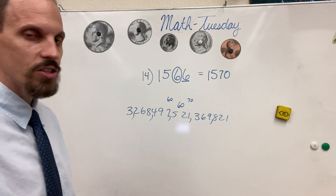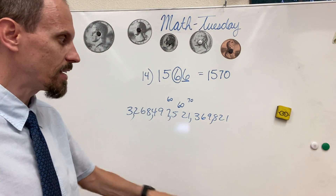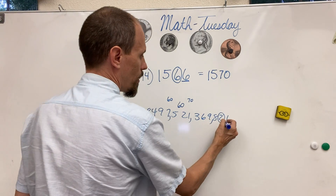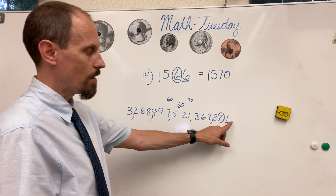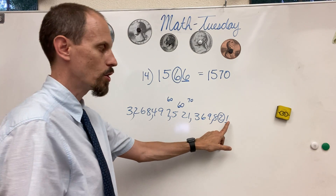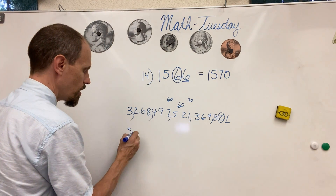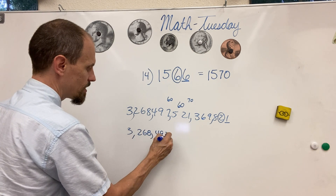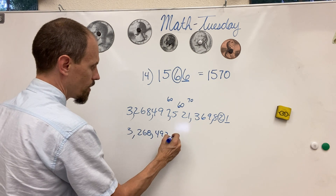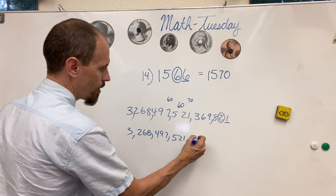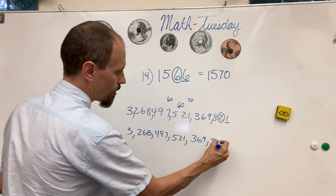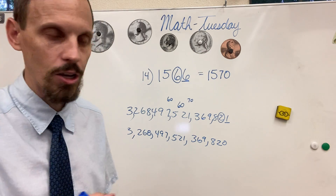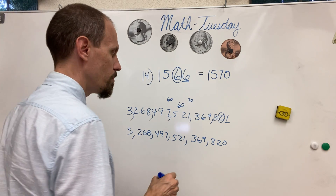Round to the nearest tens — what am I going to do? I'm going to circle my tens place and underline the ones digit. Is that five or higher? No. So I'm just going to round down. My new number is going to be 3 quadrillion, 268 trillion, 497 billion, 521 million, 369,820 — because I rounded to the nearest 10.